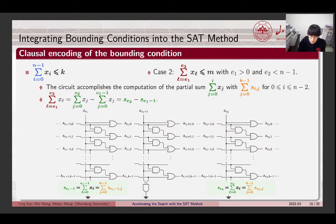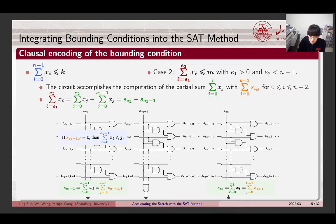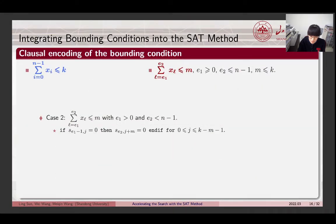Based on the former observation, the circuit accomplishes the computation of the partial sum of x with the index starting from 0. Then the partial sum in consideration can be written by the subtraction of two known partial sums. Now, if Se1 minus 1j equals 0, then the summation of the first E1 elements in the sequence of x must be no more than j. This inequality is equivalent to claiming Se2 j plus m equals 0, and the discussion can be conducted for each index j.